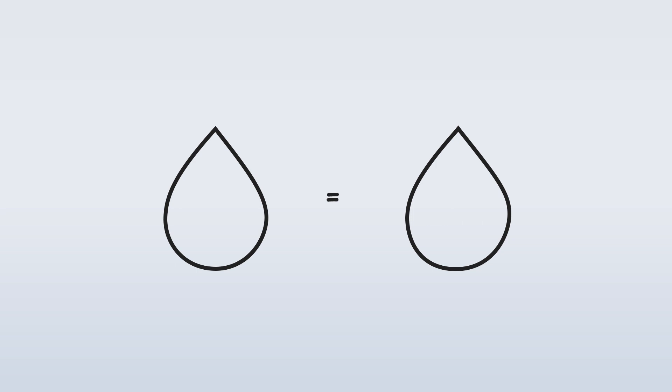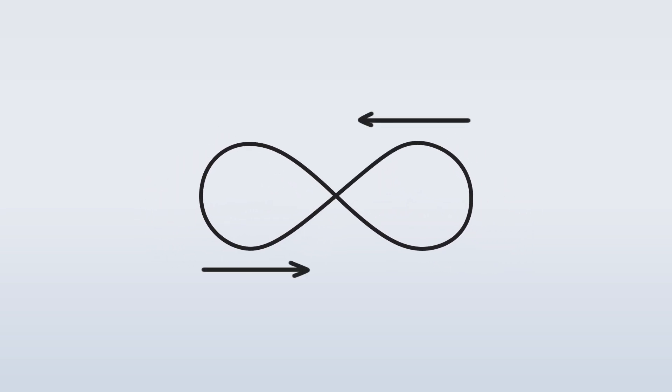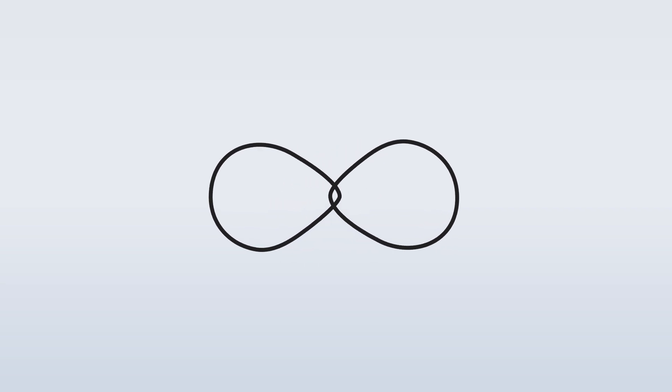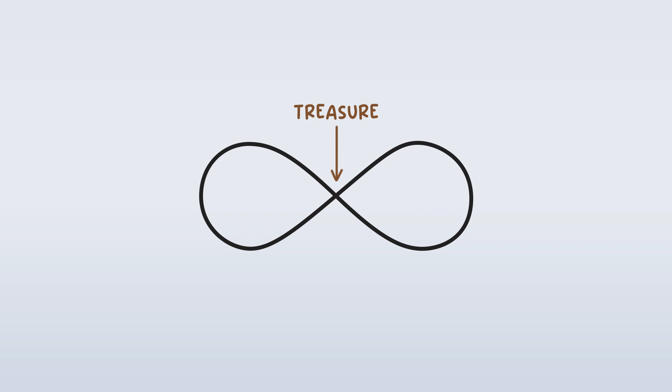The two halves of the chroma are equals, but they face in opposite directions. And there's this super special point where they come together — this point where two opposites intermix, transition, or overlap. And since X marks the spot, what exists at that point is treasure.